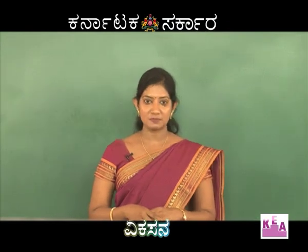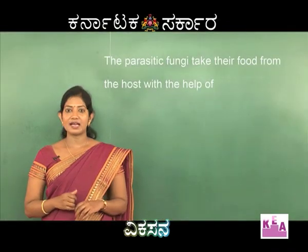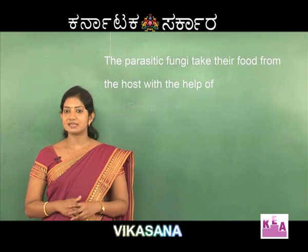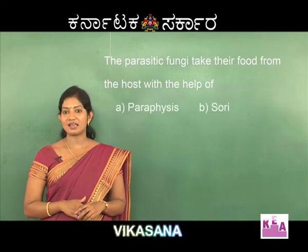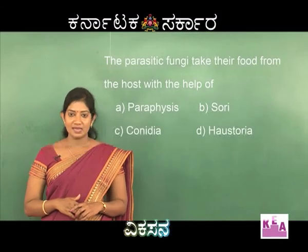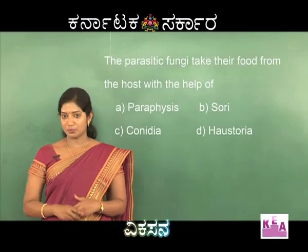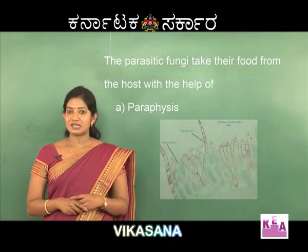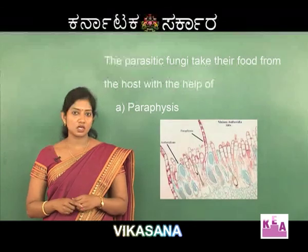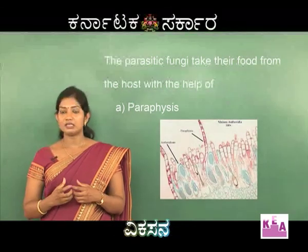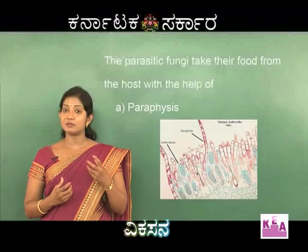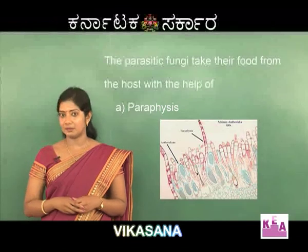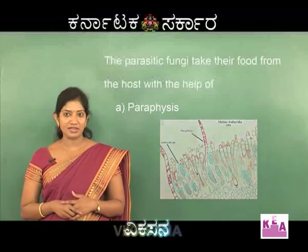Now let's see the next question. The parasitic fungi take their food from the host with the help of: paraphysis, sorae, conidia, or haustoria. Let us see each option carefully. Paraphysis are sterile filament-like structures present in between the sex organs — for example, in between antheridia or archegonia. These sterile filaments are called paraphysis.